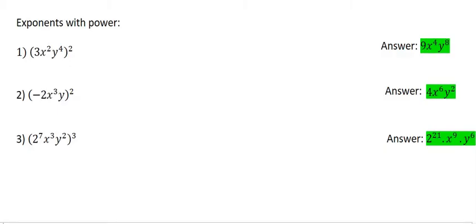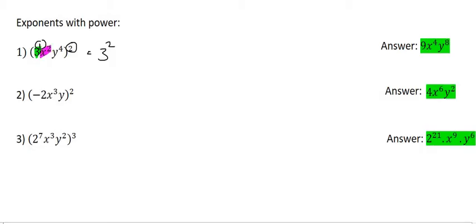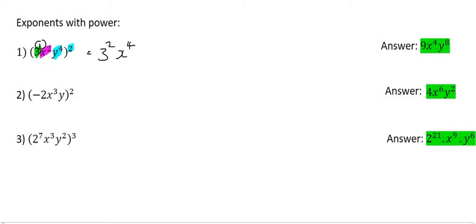Let's try some examples. With number 1, we're going to start off with the 3 first. That 3 currently has an exponent of 1, so you times the exponents — that's going to be 3 to the power of 2. Then we're going to look at the x, which has an exponent of 2, giving us x to the power of 4, because you're multiplying those. Then y to the power of 4 — the 4 and the 2 multiply to become y to the power of 8. And if you know what 3 to the power of 2 is, you can write that as 9 for your final answer.